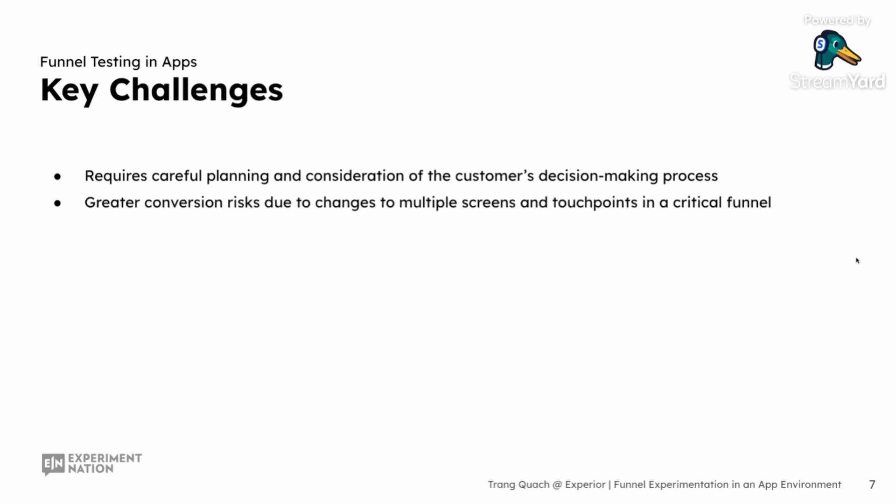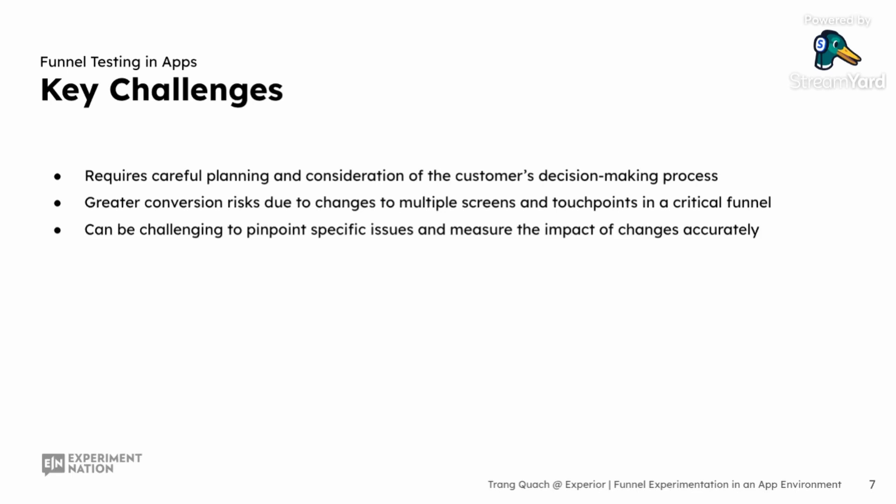Another challenge comes with analyzing and tracking experimentation results. Funnel testing often spans multiple pages or stages, which makes it difficult to pinpoint exactly where friction happens or where issues arise, in order to draw insights for learning or iterating. Without proper tracking, it can be tough to measure the impact of changes accurately. This is where having the right tools and test measurement plan becomes critical for effective funnel experimentation. It also poses a greater conversion risk given that changes spread across multiple screens and touch points, especially during a critical funnel.